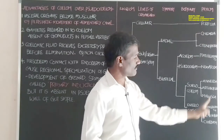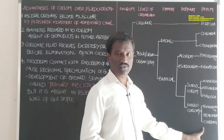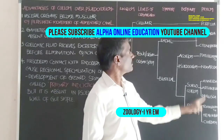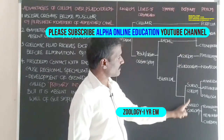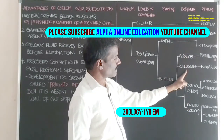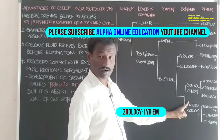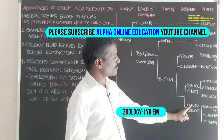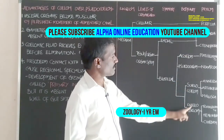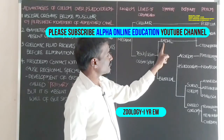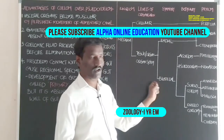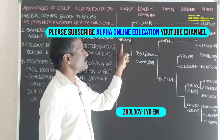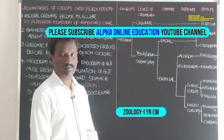These are the names of the phyla in the Metazoa kingdom, showing different types of symmetry, different types of body cavity, and levels of organization — in the kingdom Animalia.